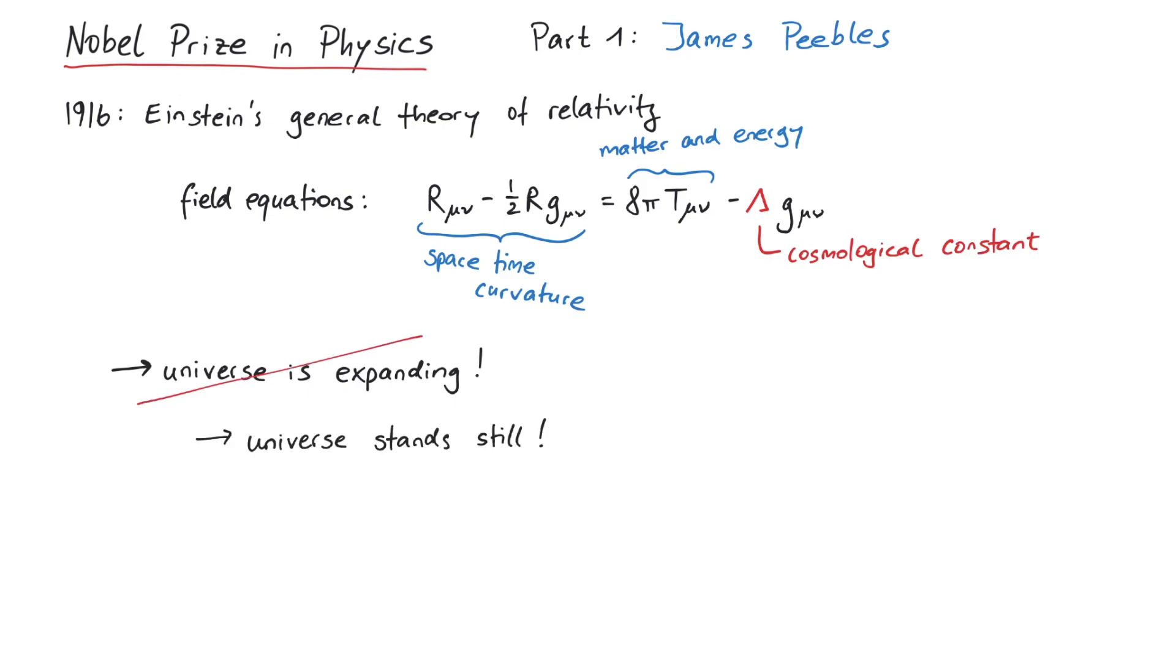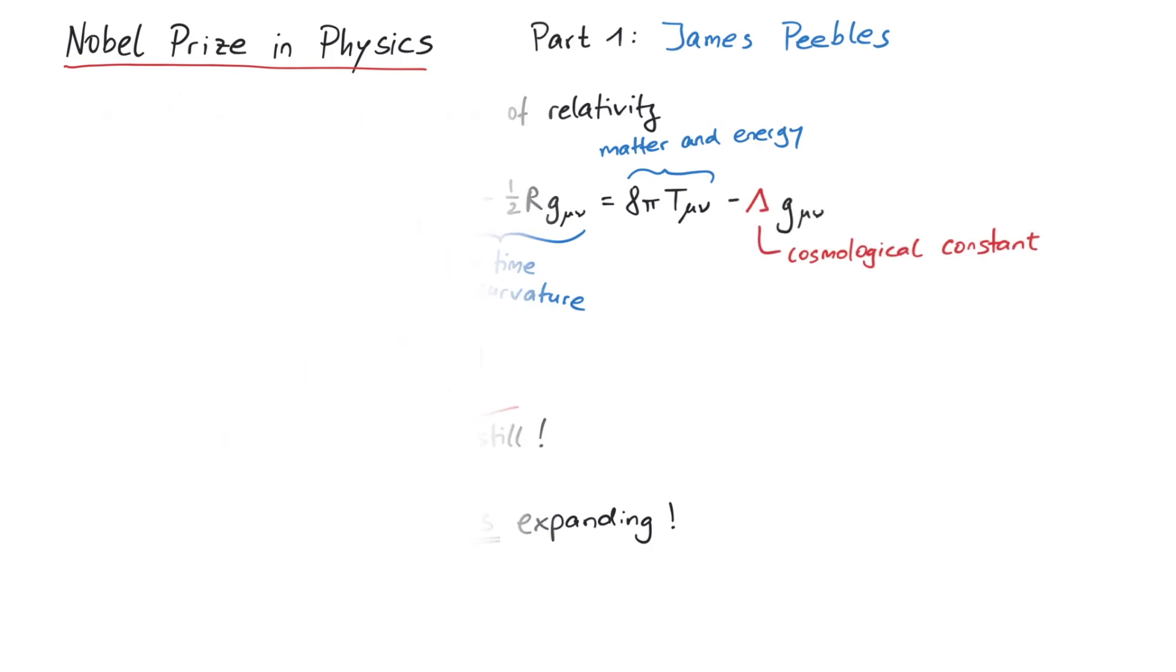Over ten years later, experimental observations showed that indeed our universe is expanding. So there was no need for his counteracting constant anymore and it was discarded. Einstein called this his biggest blunder. Little did he know that his constant would return over half a century later.